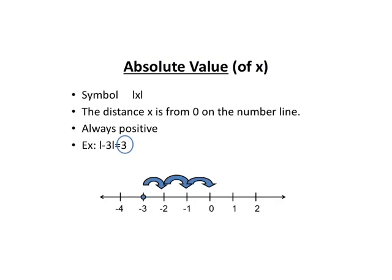A quick reminder of the symbol: the symbol for absolute value is the bars. It means the distance that number is from 0 on a number line, which is always positive. Quick example: the absolute value of negative 3 — to get from negative 3 to 0 on a number line is 3 spots, so the absolute value of negative 3 is positive 3.